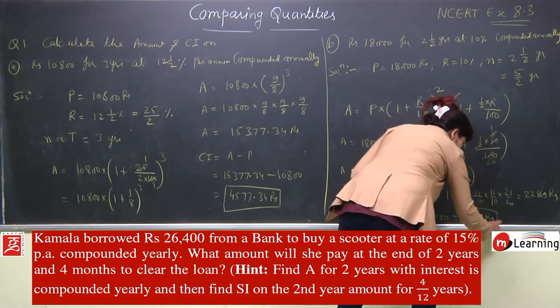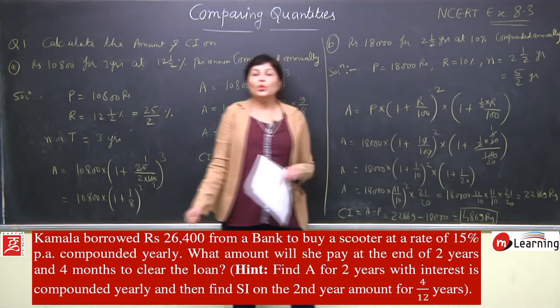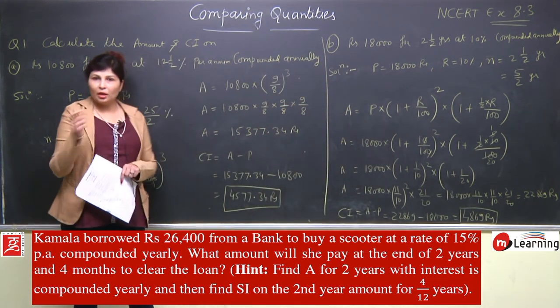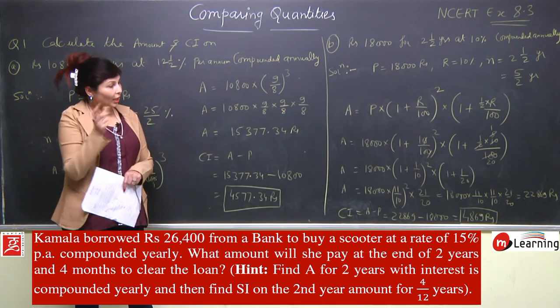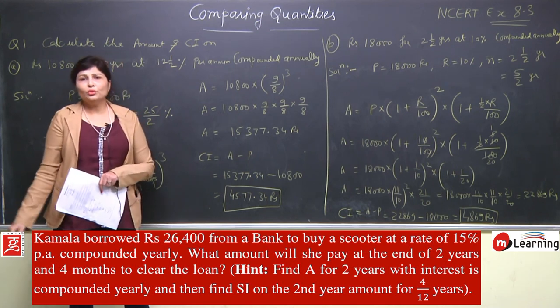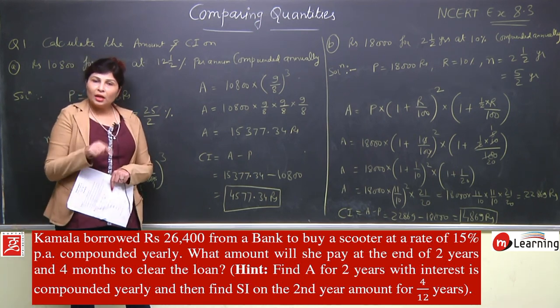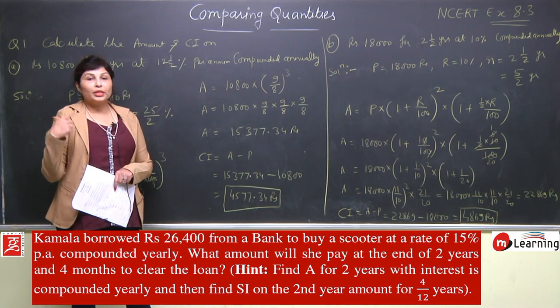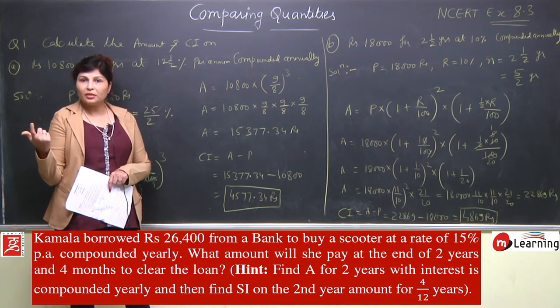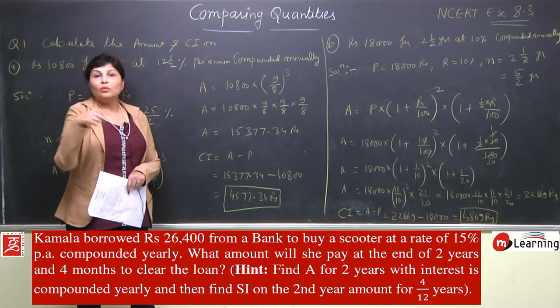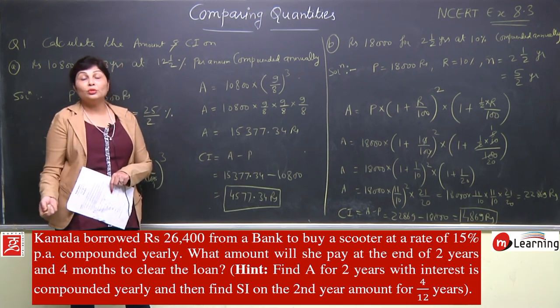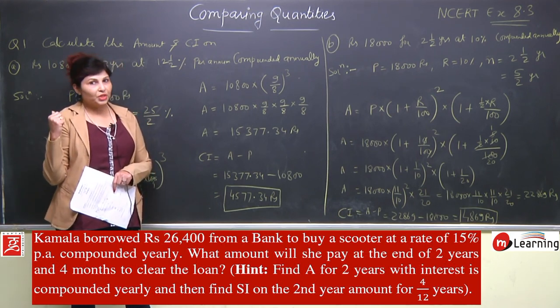But this is the amount. We need compound interest. CI = Amount - Principal = 22,869 - 18,000 = Rs 4,869. So we solved the fractional case - 2.5 years was given, so we took 2 years separately and half year separately, and solved it through this form. These were two questions that were quite simple and direct.